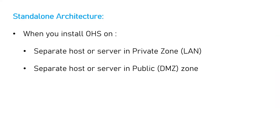When we talk about standalone architecture, consider the case where you install OHS on a separate host in the private zone. This means you have your internal network in your organization, but OHS is on a separate host while the application server is on another host. You can divert traffic from the OHS host to your private application host — both are in the private zone but on separate servers. For this, you install OHS in standalone mode.